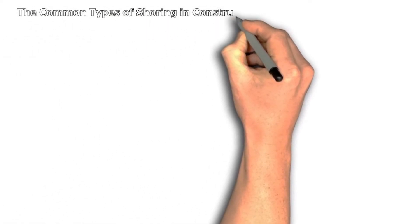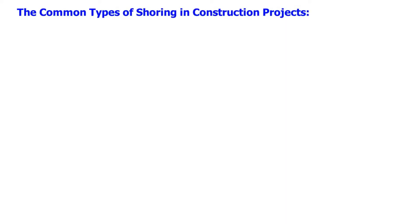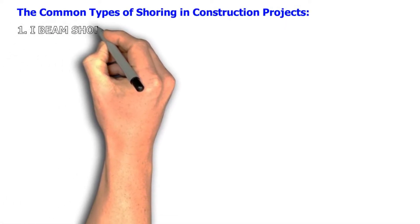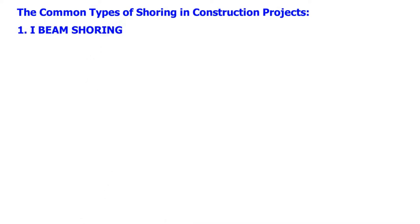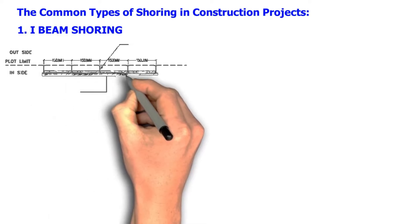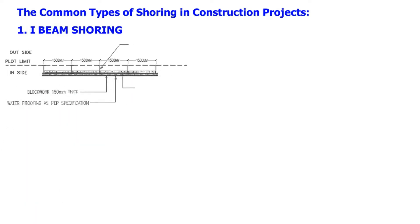The common types of shoring that we usually encounter in construction projects are: Number 1, I-beam shoring. Also known as Soldier Pile Walls, these are the most common type of shoring encountered in a construction project.